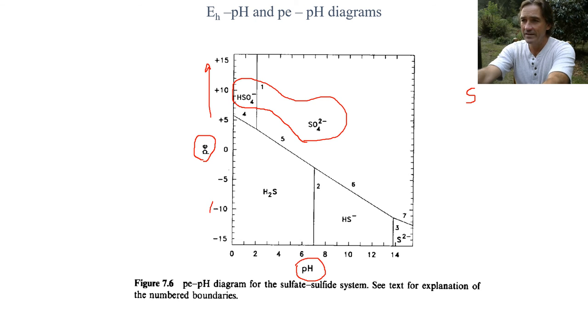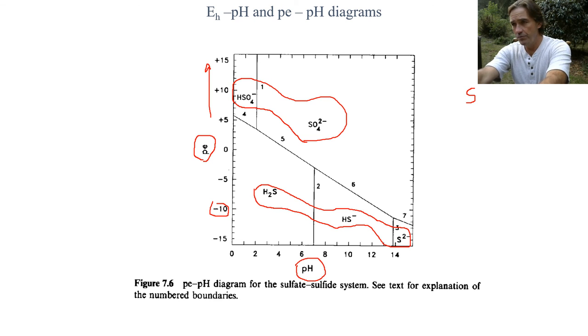Then at more negative PEs, we see the sulfides. So this is a pretty simple example, but nonetheless, it will show you with respect to pH what to expect in a given environment. These are very common plots that are used by environmental scientists. You should be able to read a plot like this and answer questions given your knowledge about anaerobic and aerobic environments.